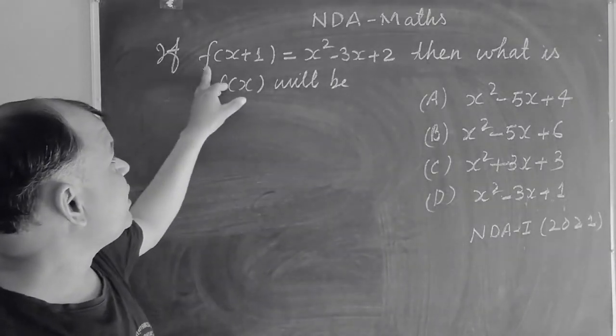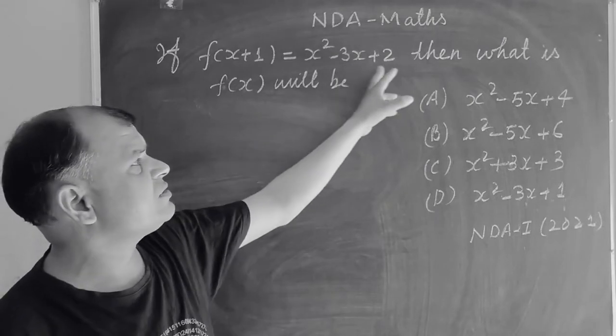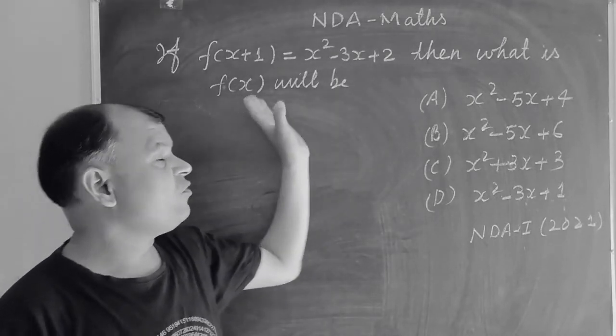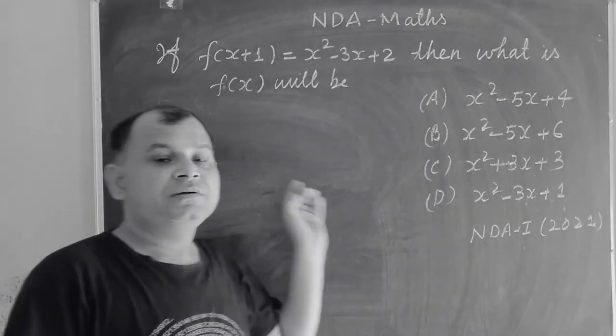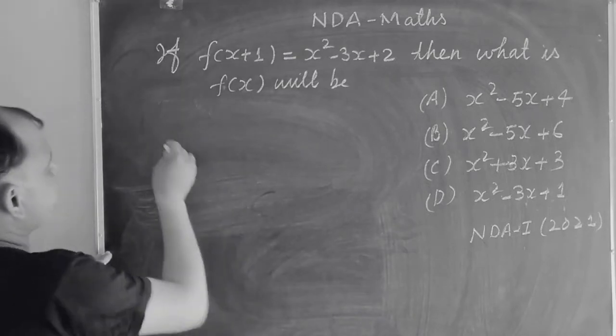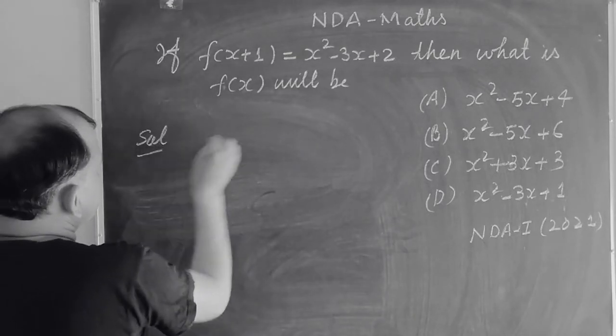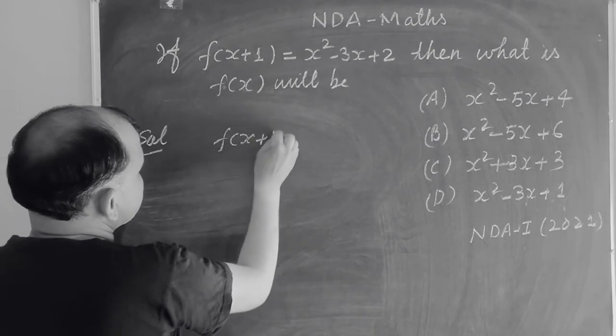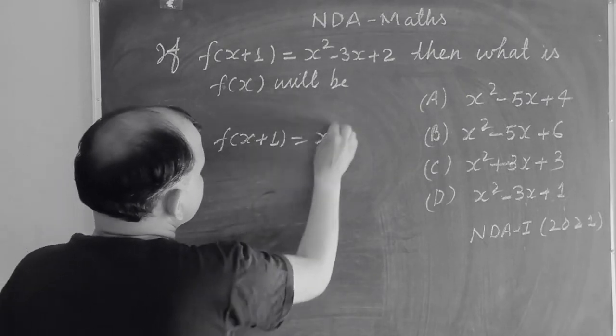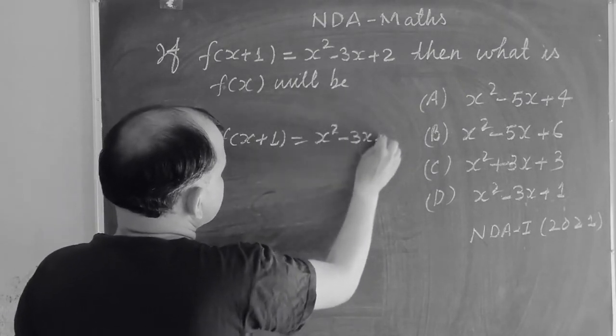The question is: if f(x+1) equals x² minus 3x plus 2, then what is the value of f(x)? Here the function f(x+1) is given as x² minus 3x plus 2.